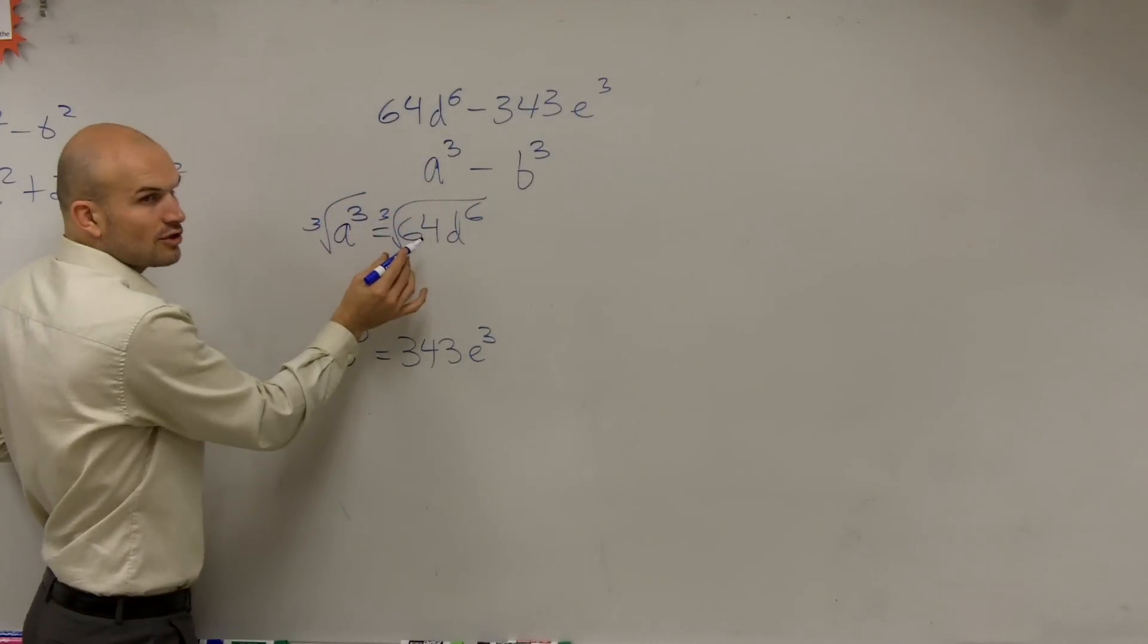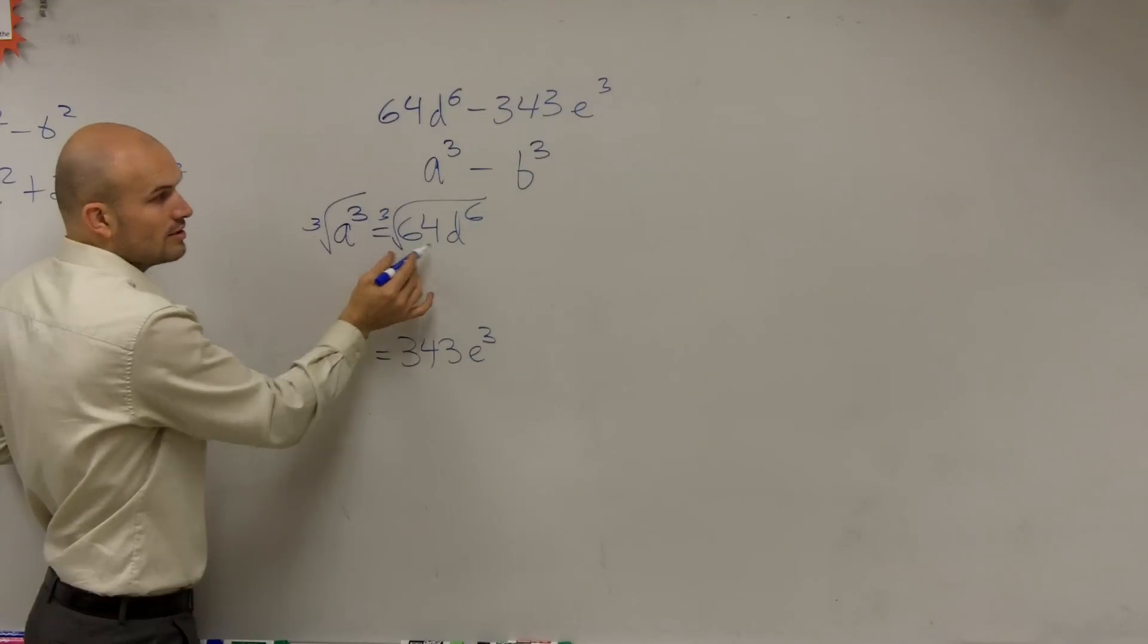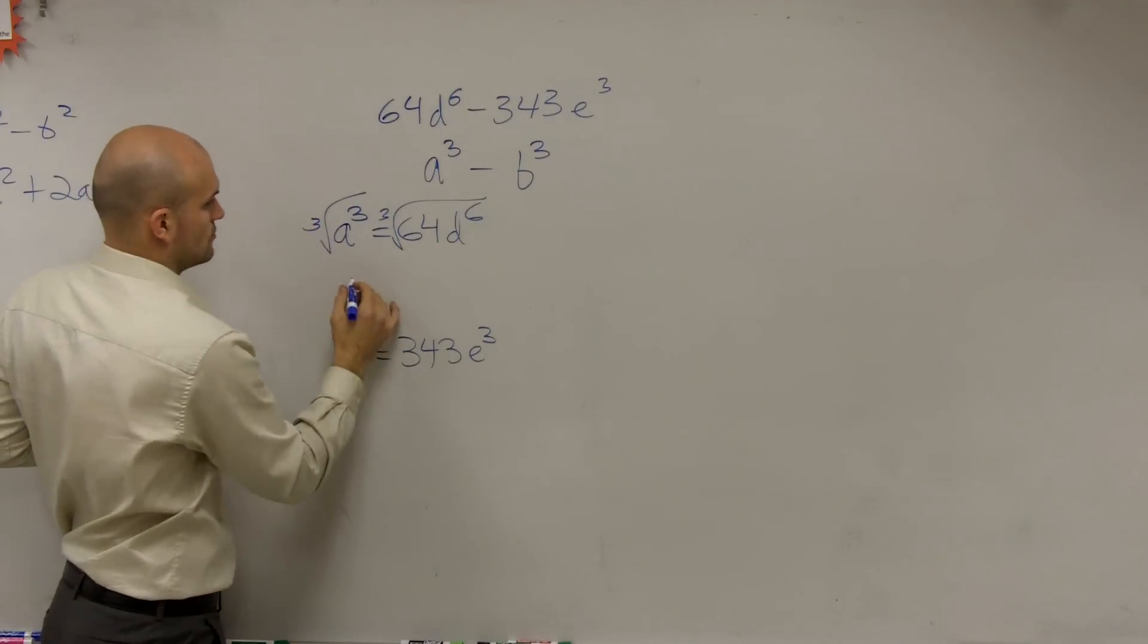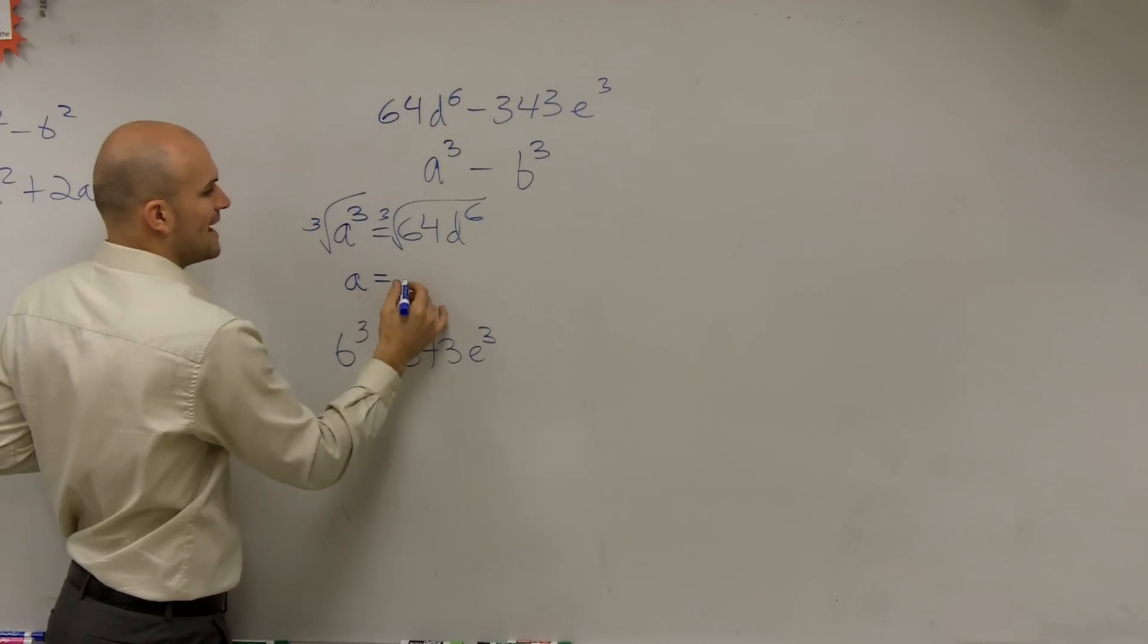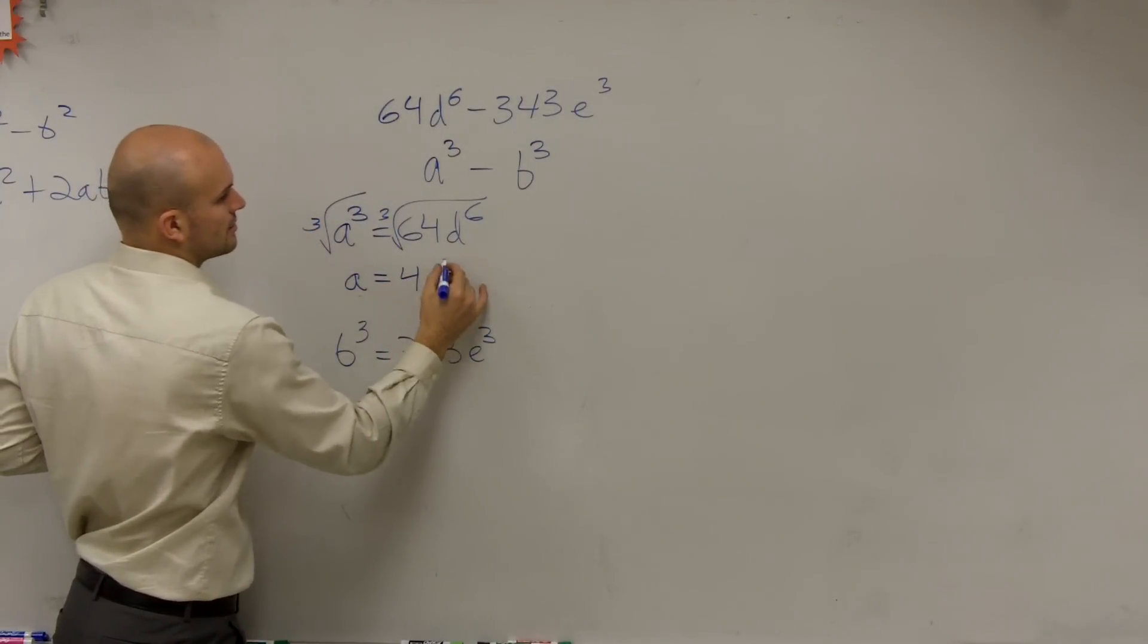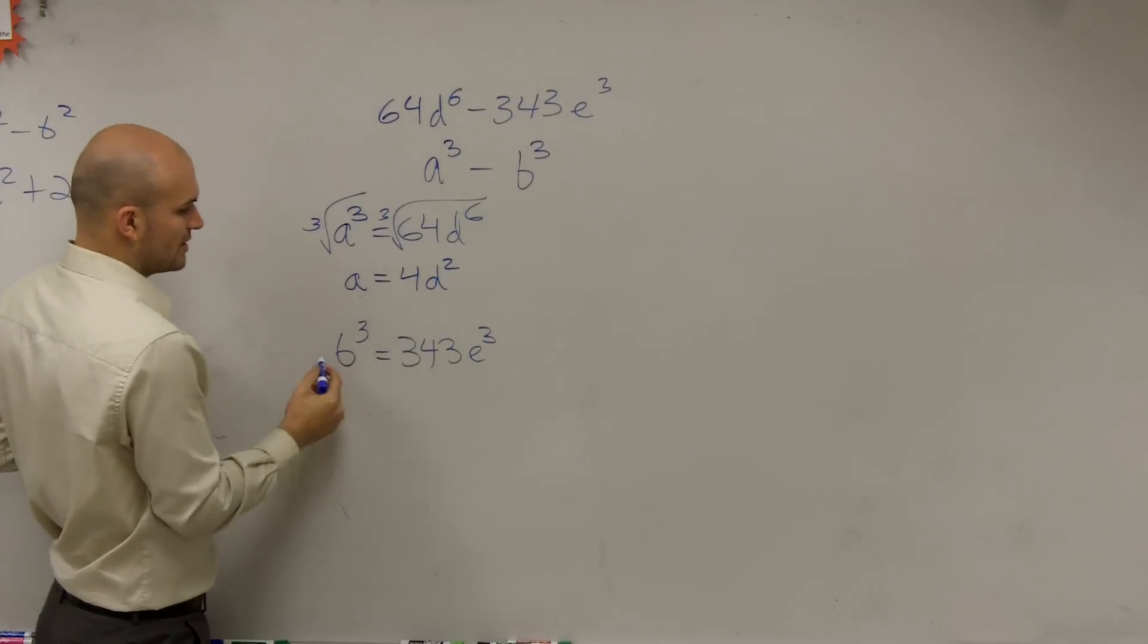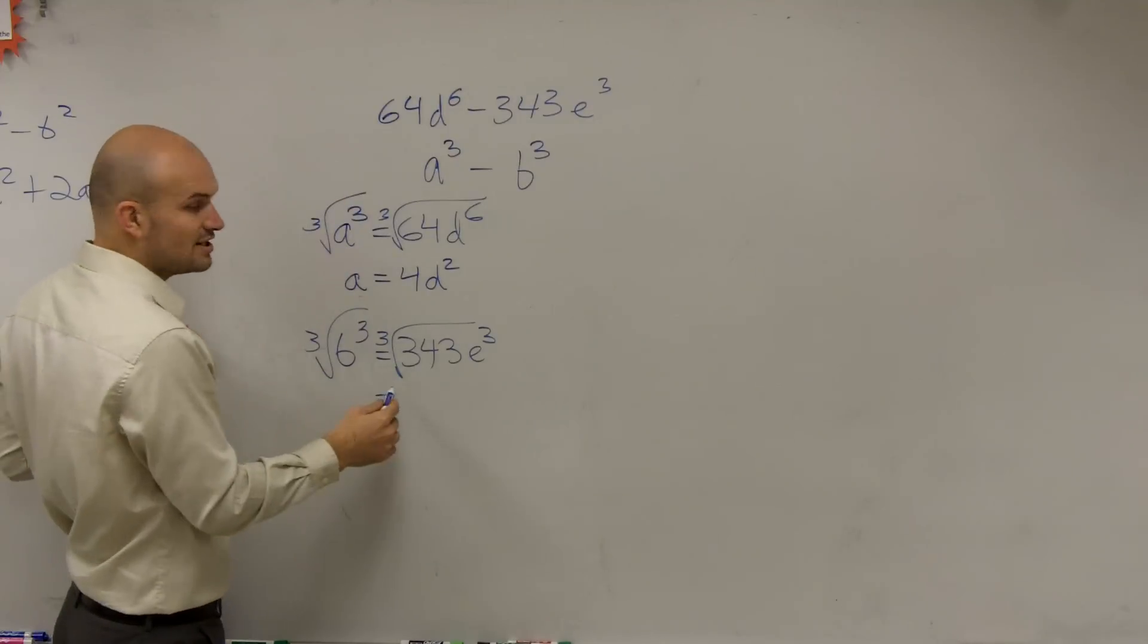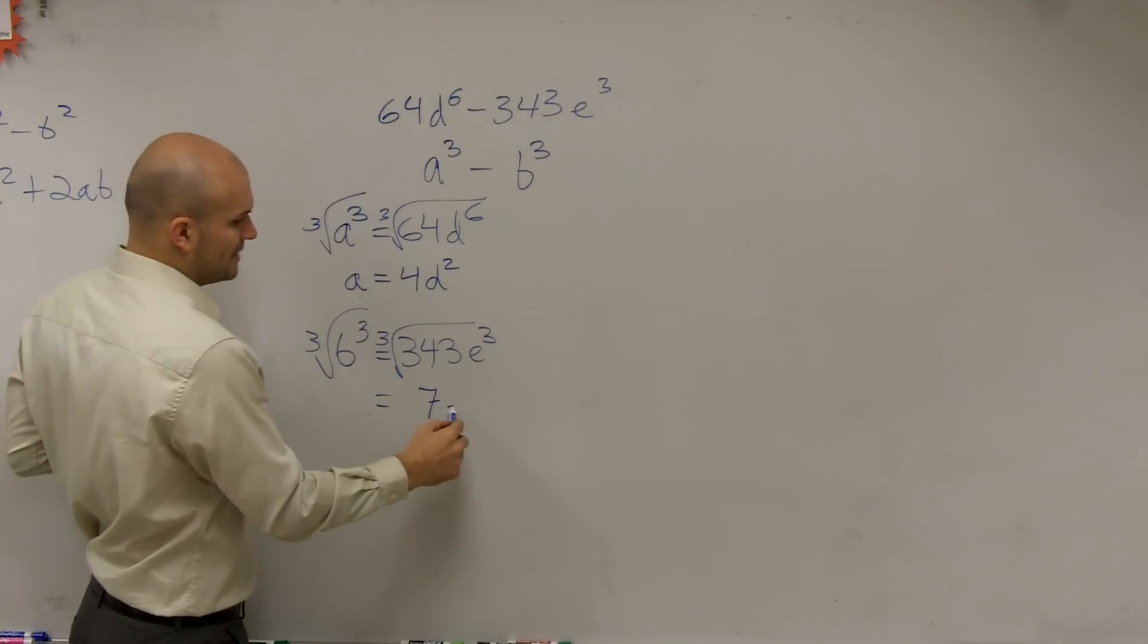Yes, 64 cubed is 4. d cubed is 2. So therefore, a equals 4 d squared. Over here, you take the cube root. And as Sam mentioned, it's 7 e.